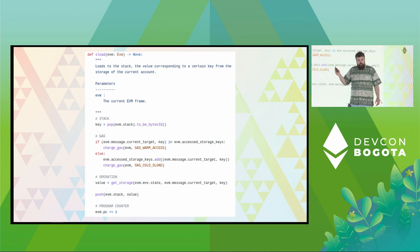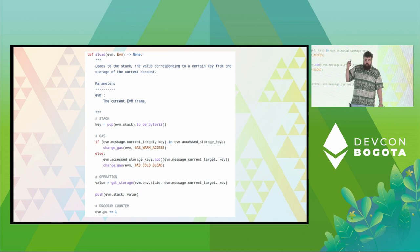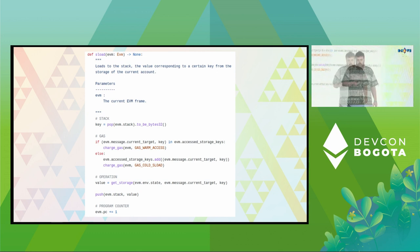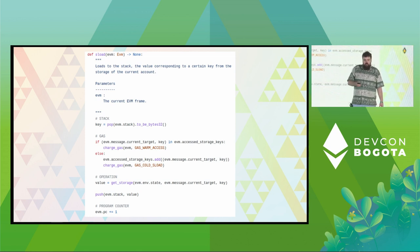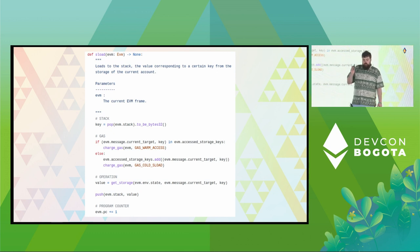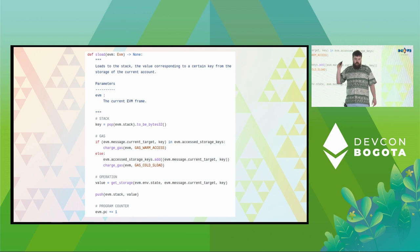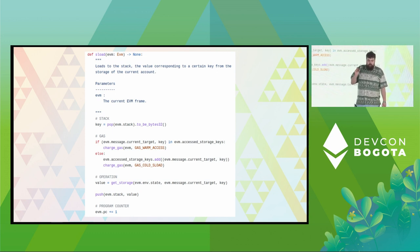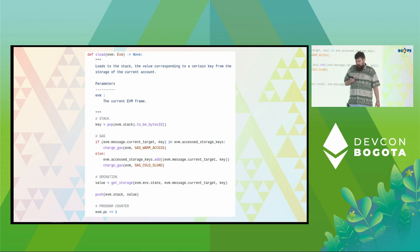Here's a sample — this is the SLOAD opcode, to give you a feel. You can immediately see we've really tried to make it as readable as possible, divided into individual sections with headers. This actually matters: there are quite subtle EVM semantics relating to the fact that gas calculations are done before any computation is done, and you can get very confused about the subtleties of certain opcodes if you don't realize this.